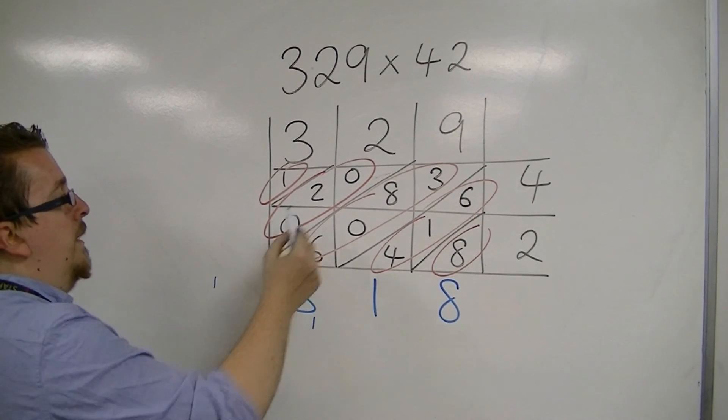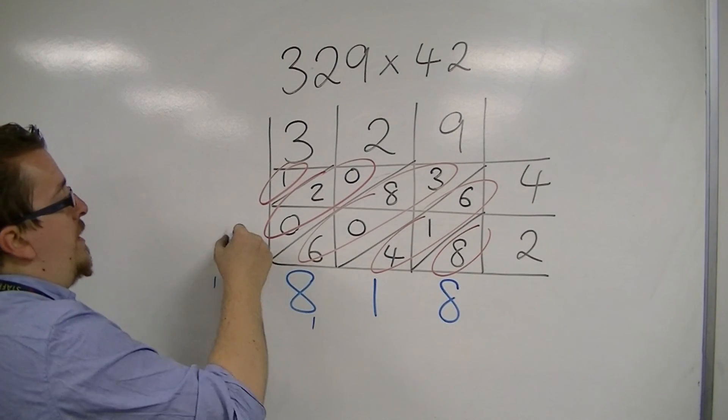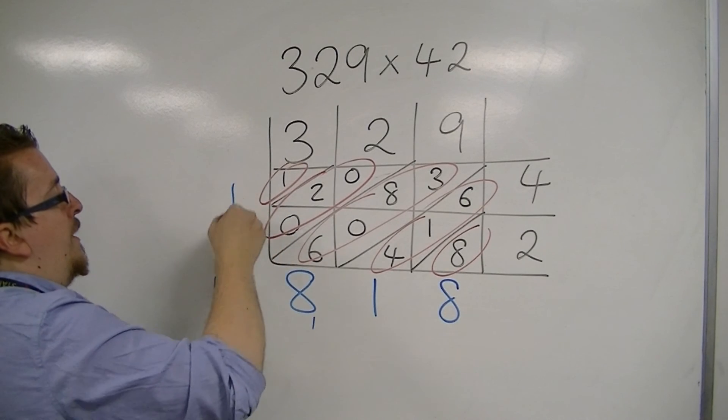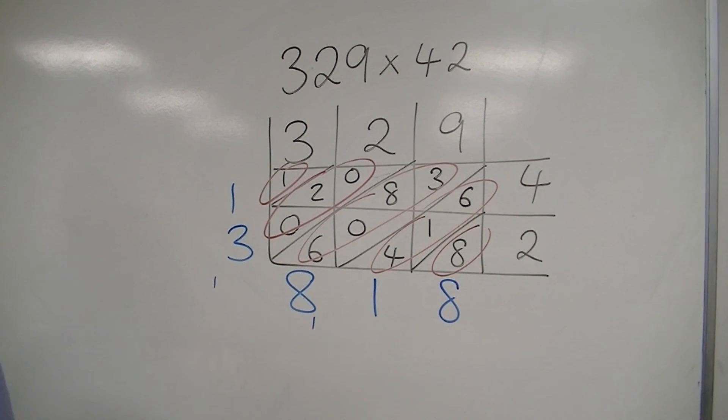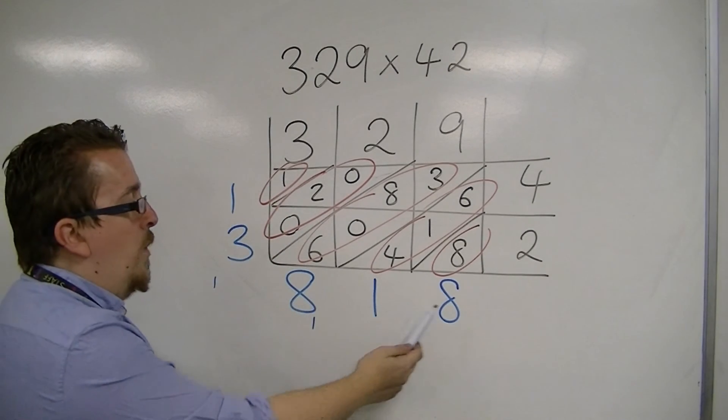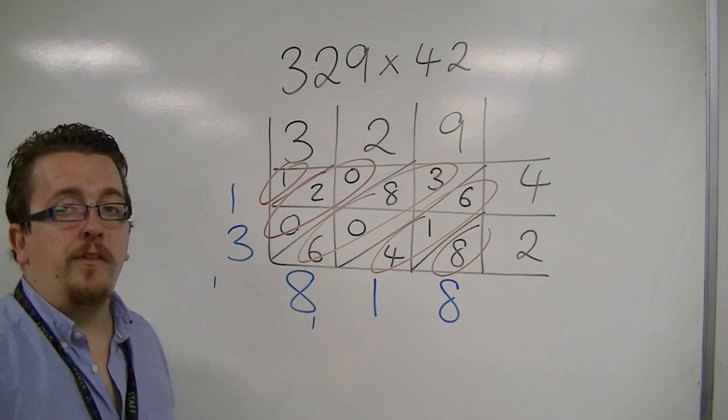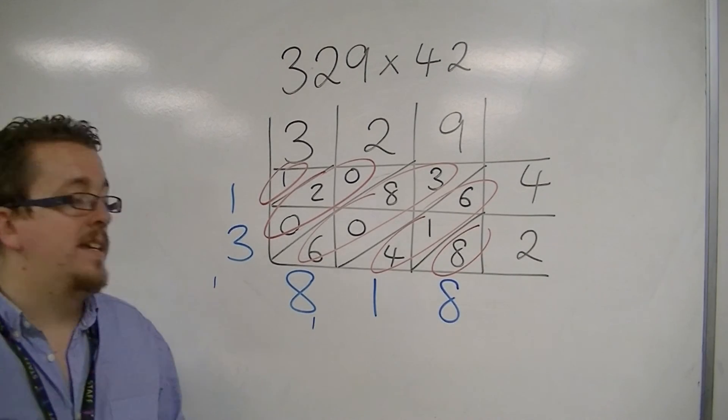2 plus that 1 is 3. And then we've finally got that 1 afterwards. So, the answer is 13818. 13,818.